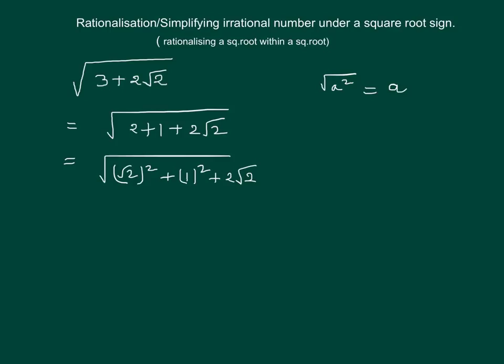We can compare this with (a + b)² = a² + b² + 2ab. On comparing, we can see that a = √2 and b = 1.